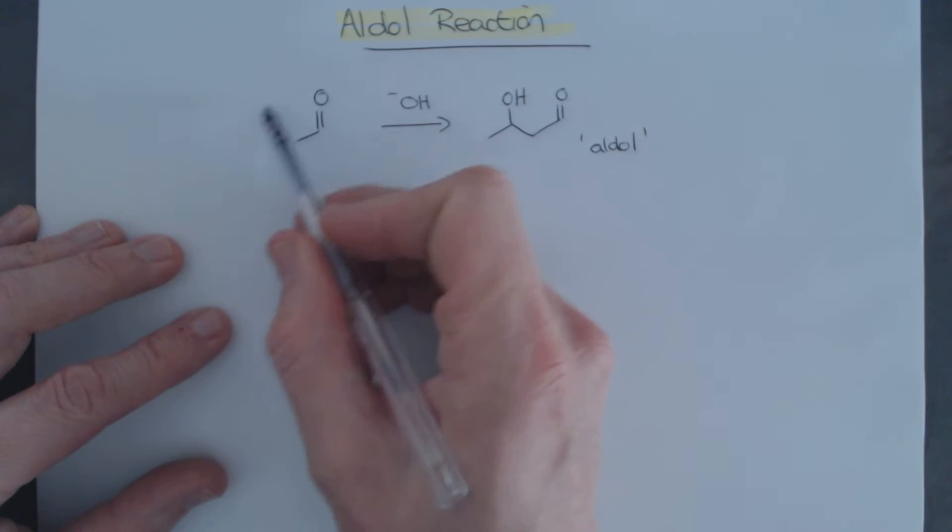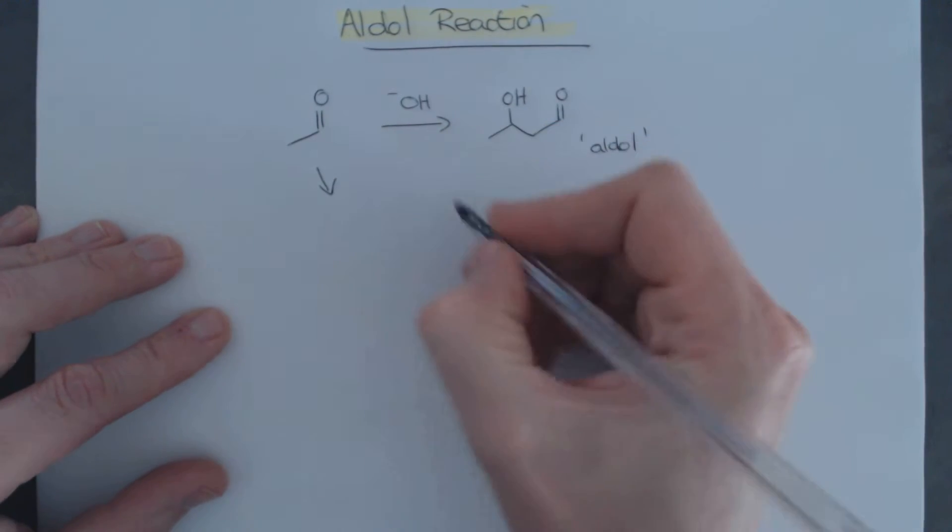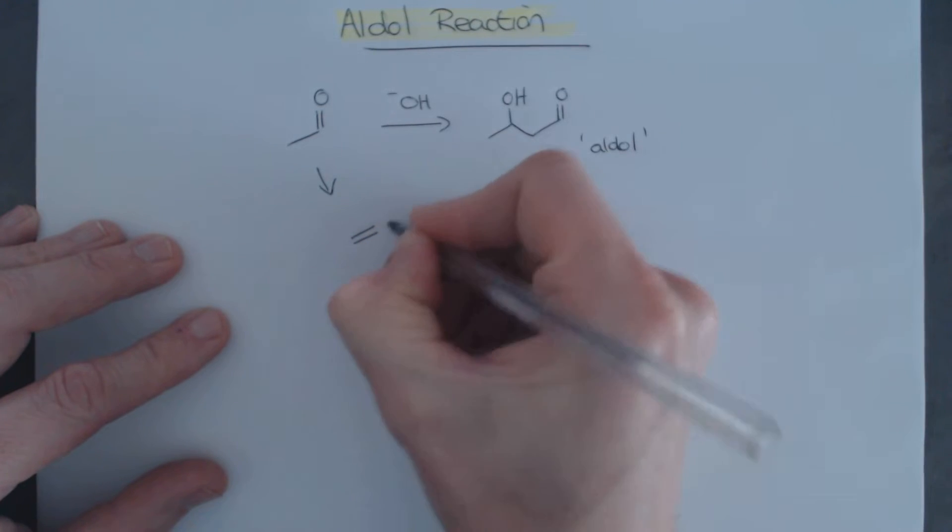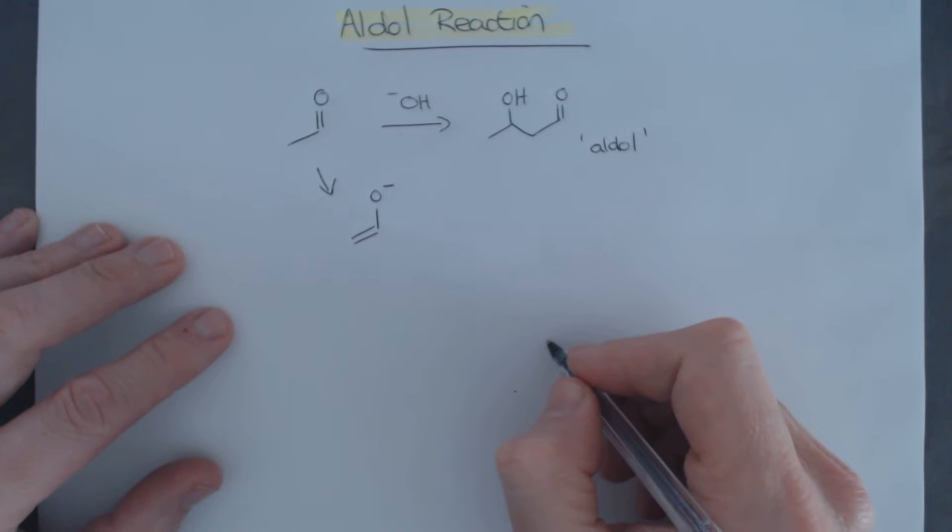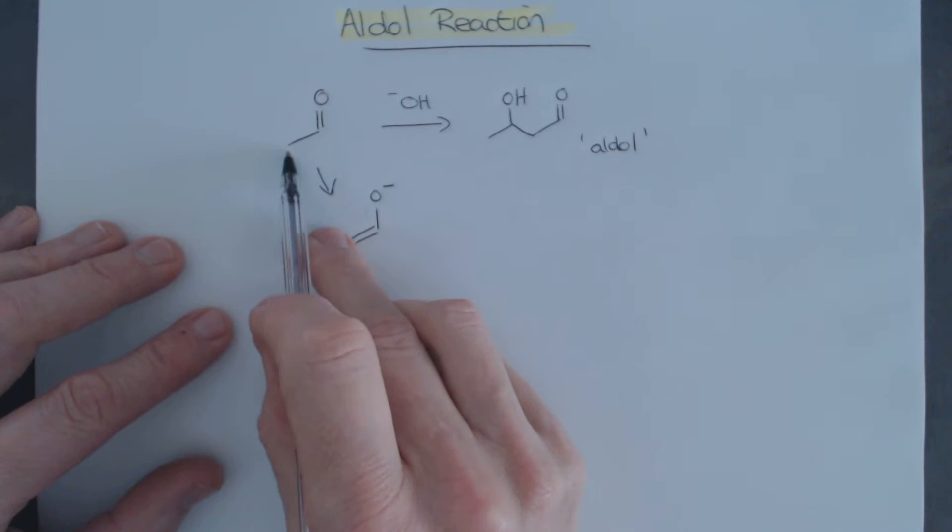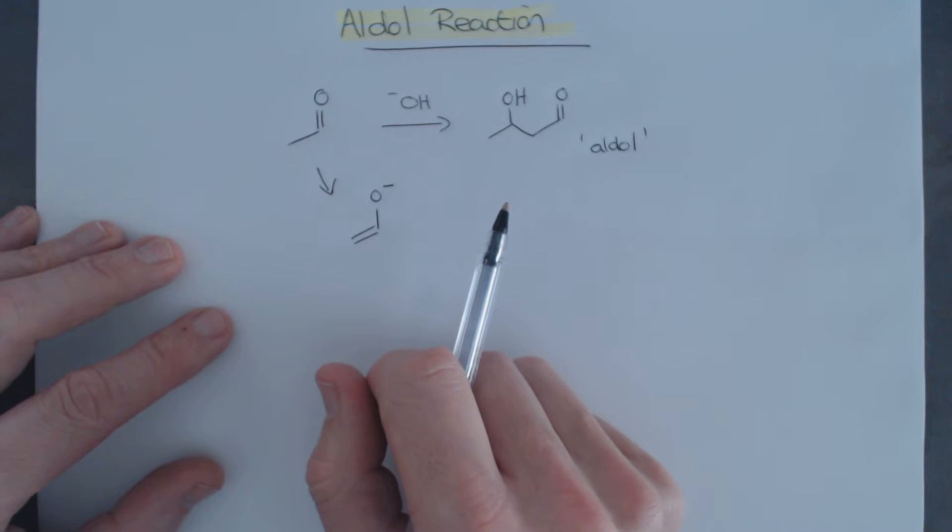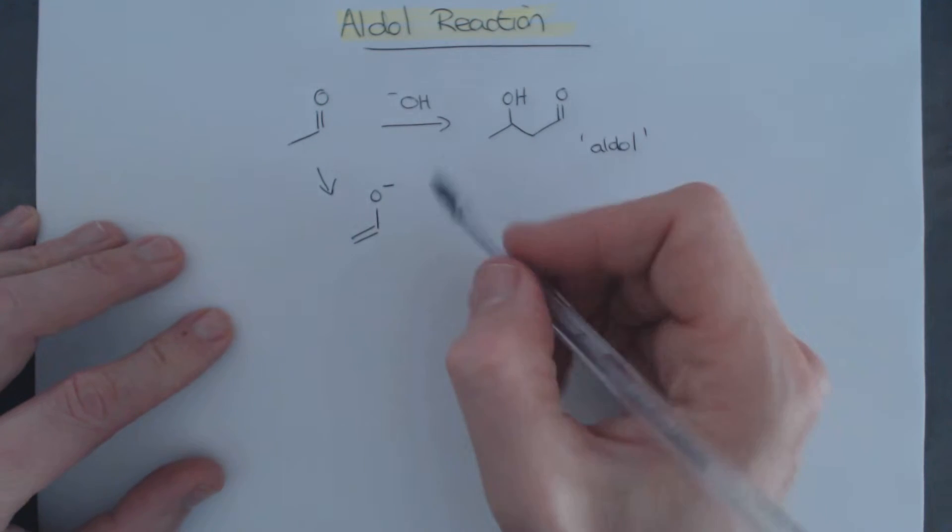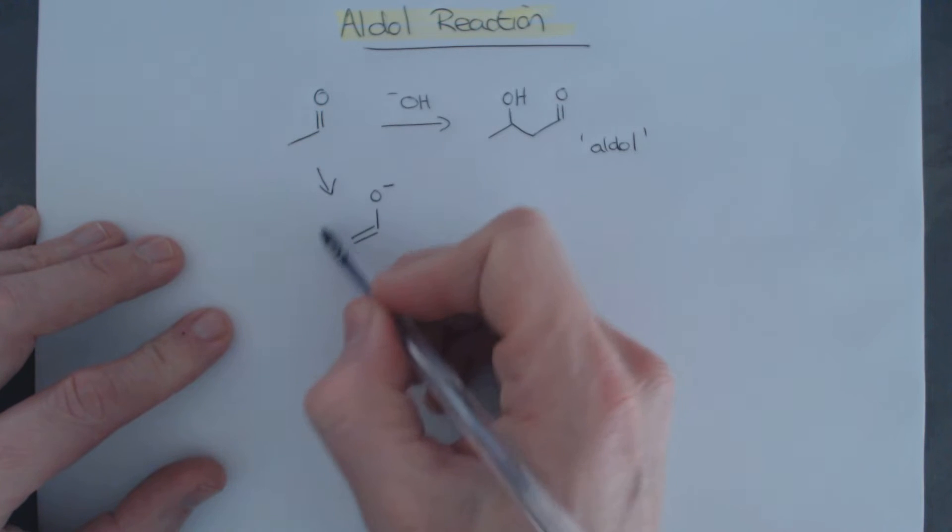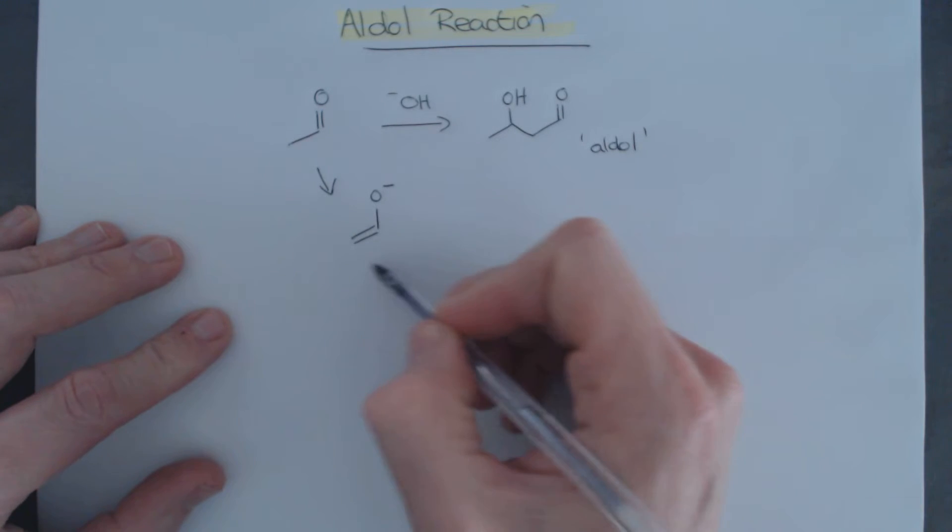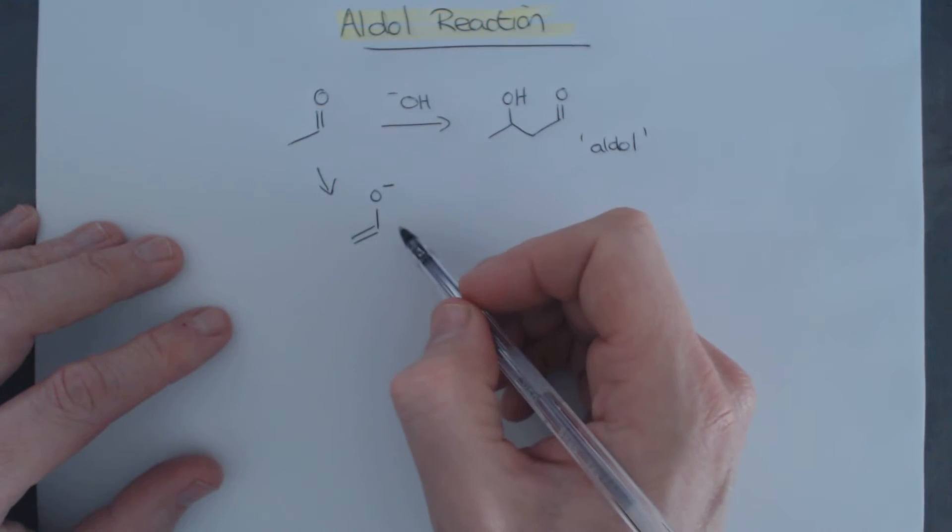And the problem is this: when a base reacts with an aldehyde, our initial intermediate is the enolate, which would look like this over there. So we deprotonate alpha to the carbonyl, and we form this enolate intermediate. And what you have seen so far in your course is that we use these enolates and enolate equivalents to alkylate in some way.